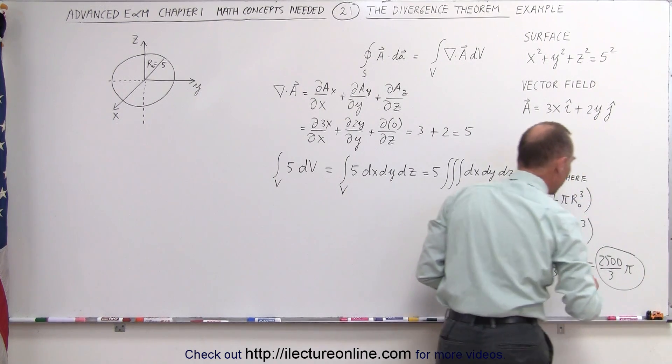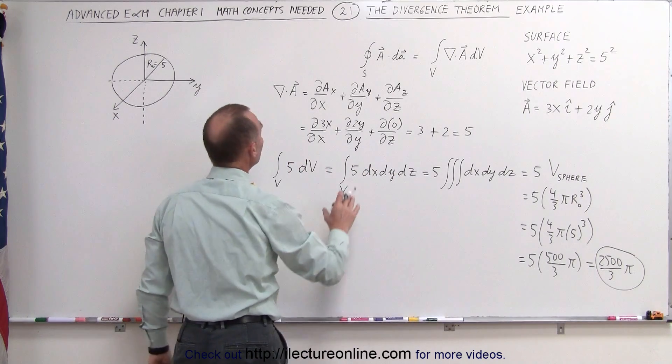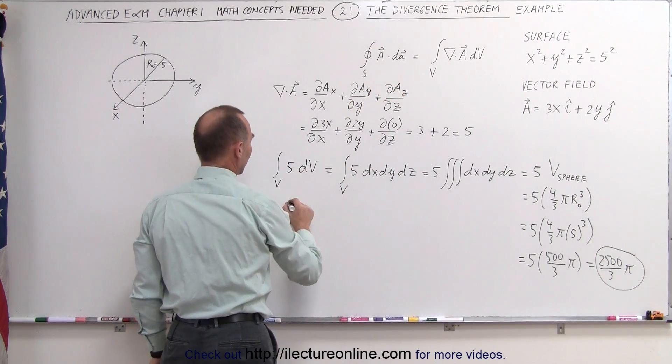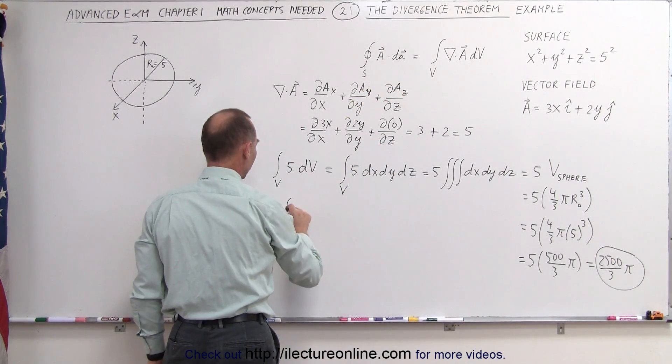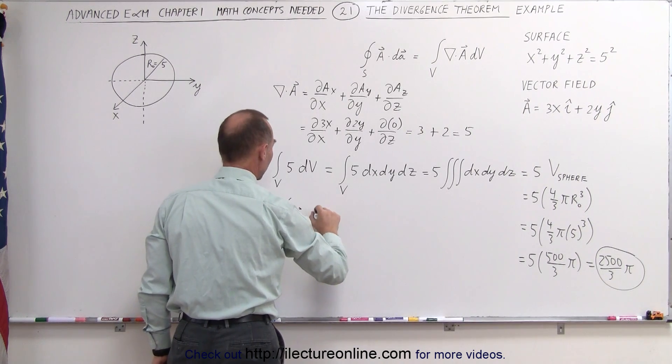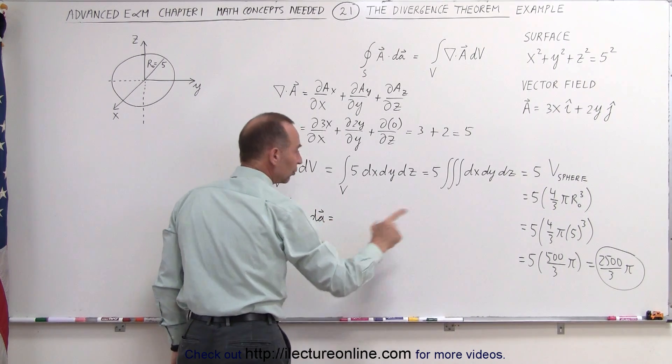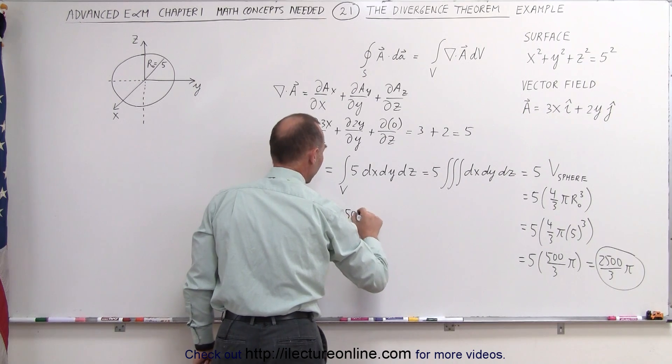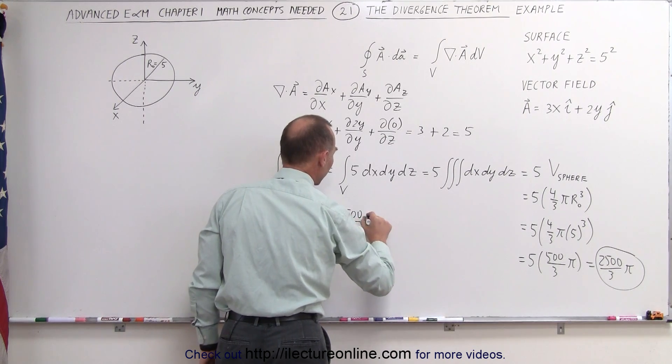So that would be the integral on the right side, which means, based upon that, we could say that the integral, the surface integral of the vector field dotted with the A must be equal to 2,500 over 3 times pi.